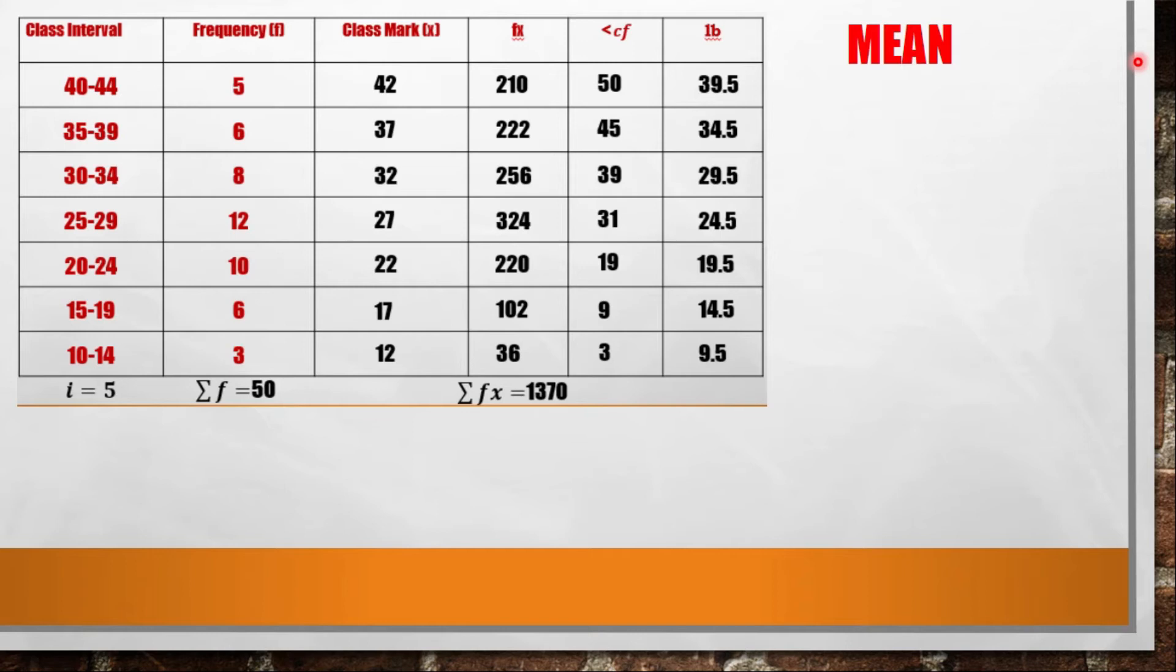The first thing we need to find is the mean. Using the formula x̄ equals the summation of fx over the summation of f, just substitute. The summation of fx is 1370 divided by the summation of frequency which is 50. So 1370 divided by 50 equals 27.4. That's the value of the mean.